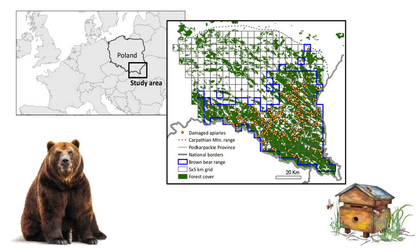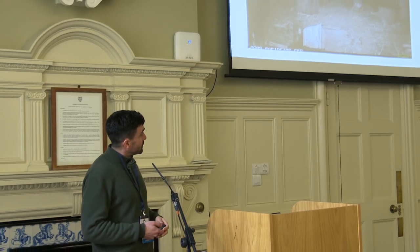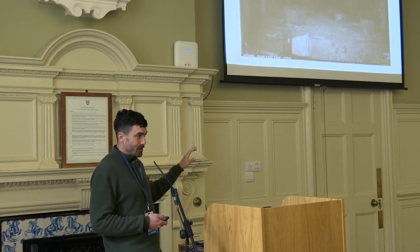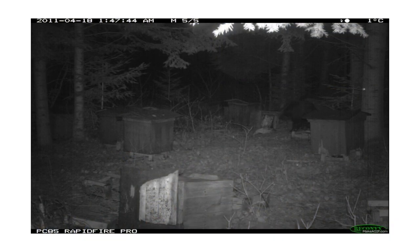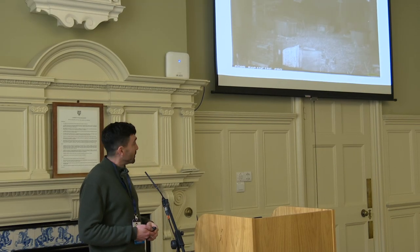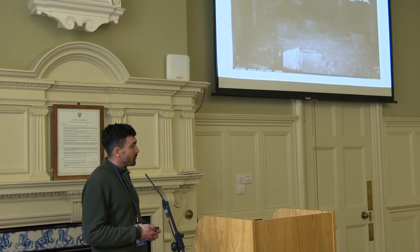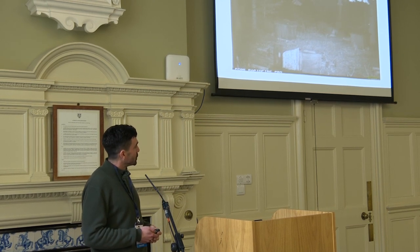We tested this model with the case of brown bear damage to apiaries. Here you see the location of damaged apiaries from 2010 to 2015 in the Polish Carpathians. The blue line delimits the brown bear distribution, and the green color is the forest where they live and move. You can see a bear rolling a beehive looking for larvae — it's not only about the honey, they also go for the larvae in April, which are rich in protein.